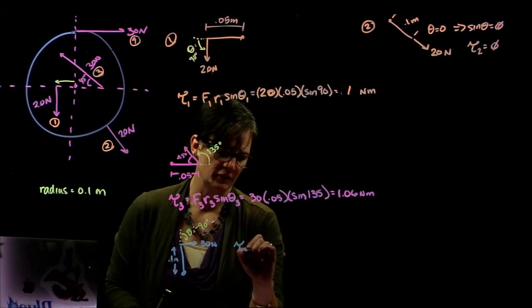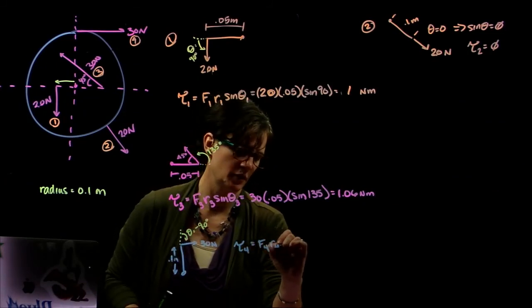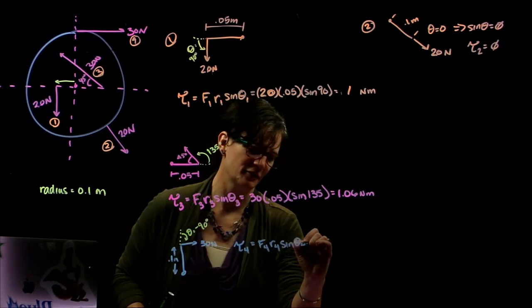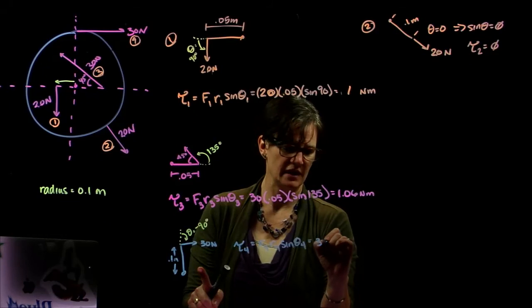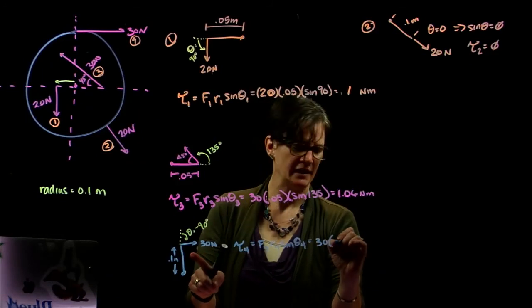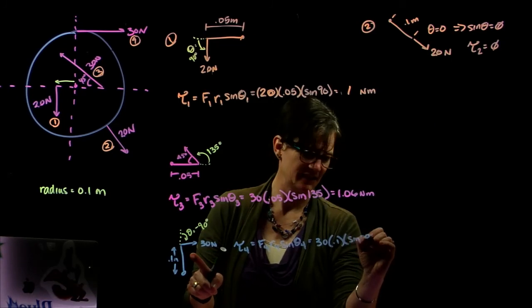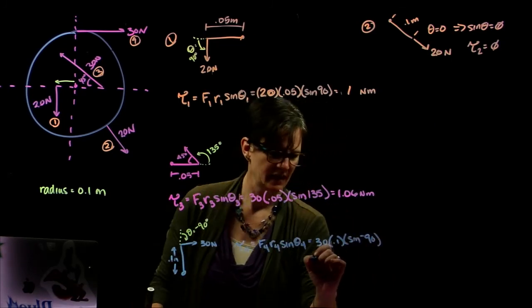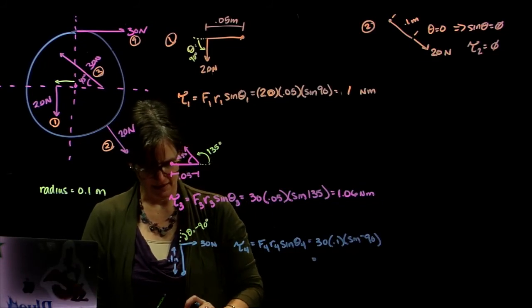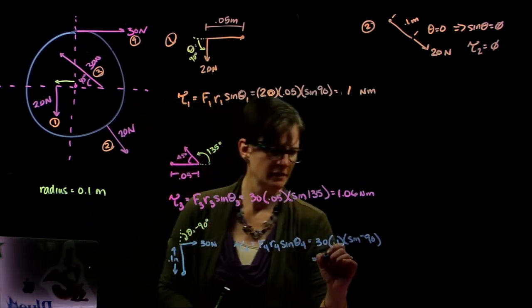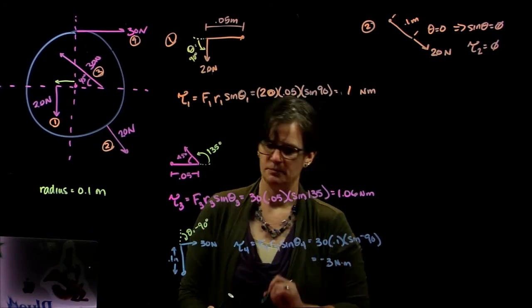So torque number four is force four times radius four times the sine of angle four, which is equal to the force of 30 times the radius of 0.1 times the sine of negative 90, which is negative one. We get negative three newton meters.